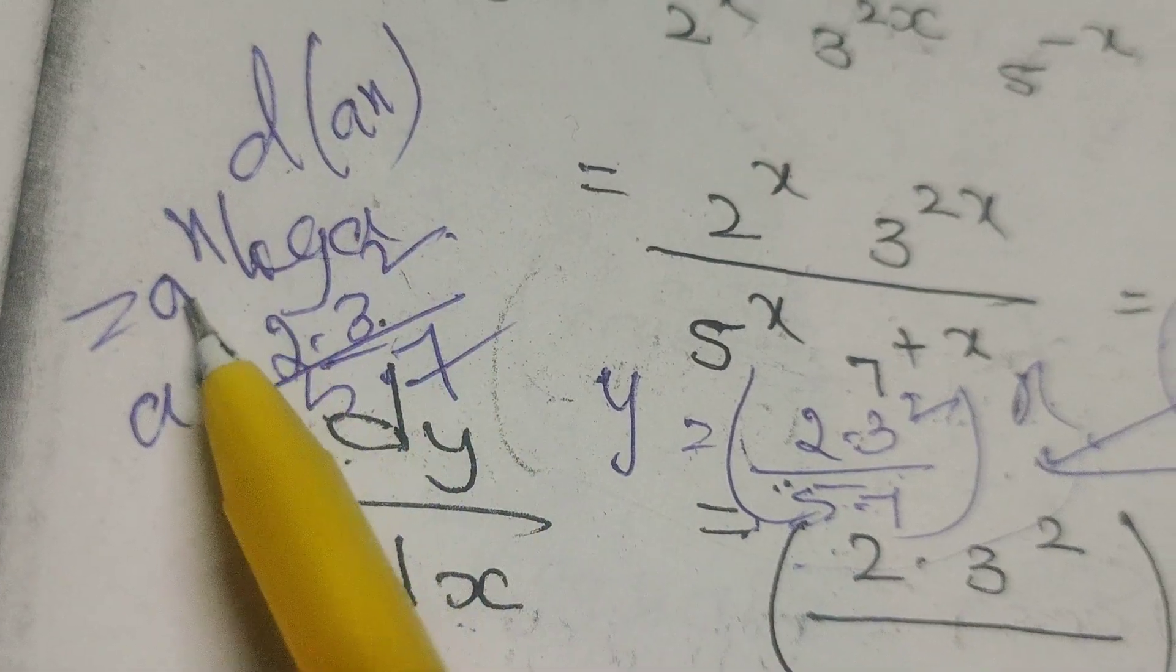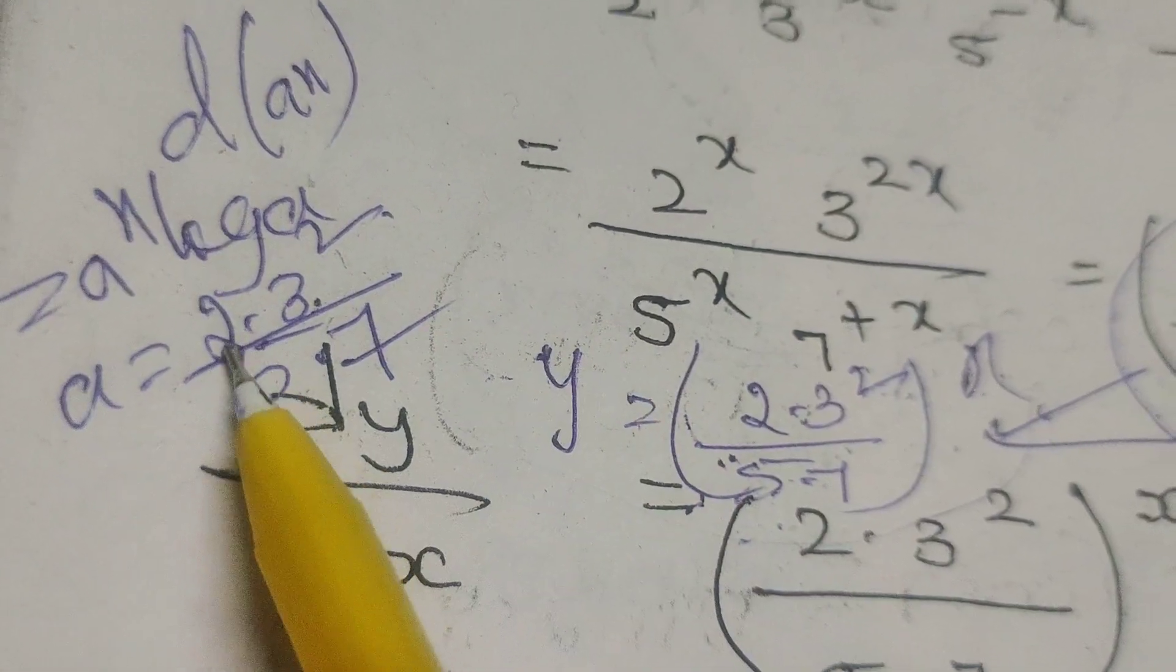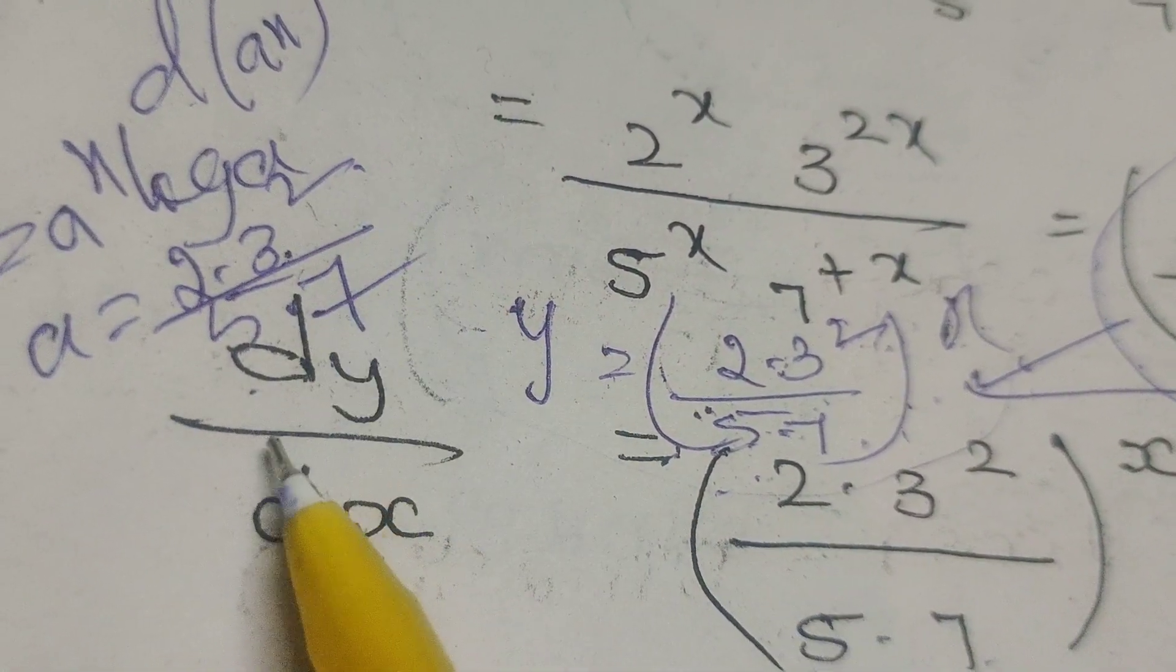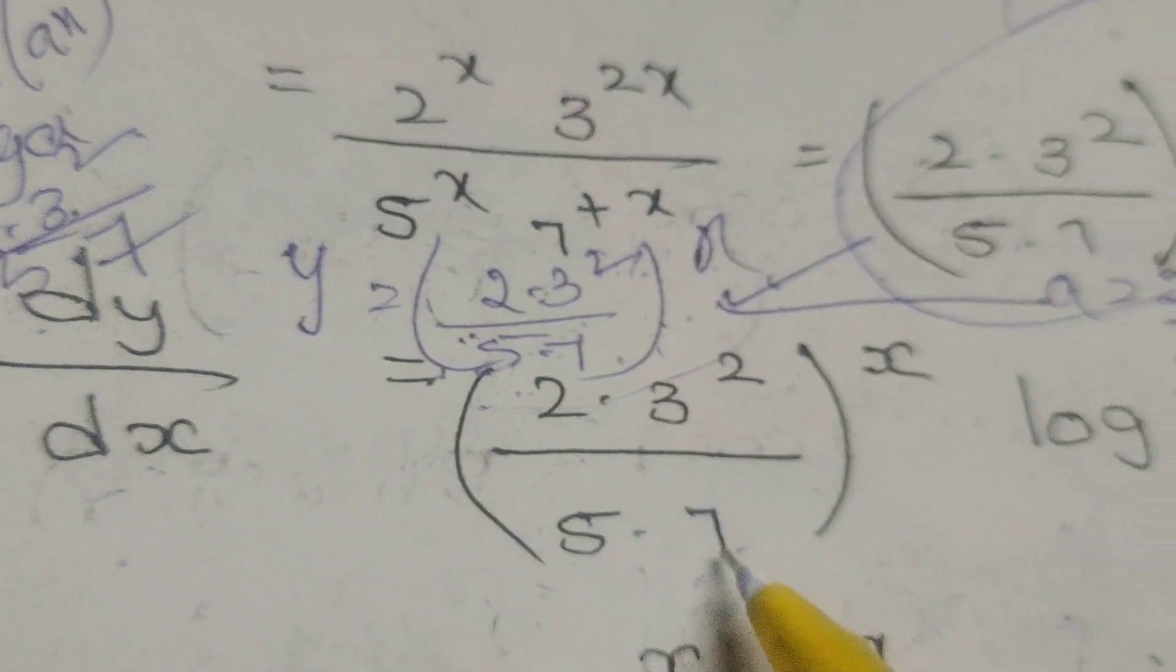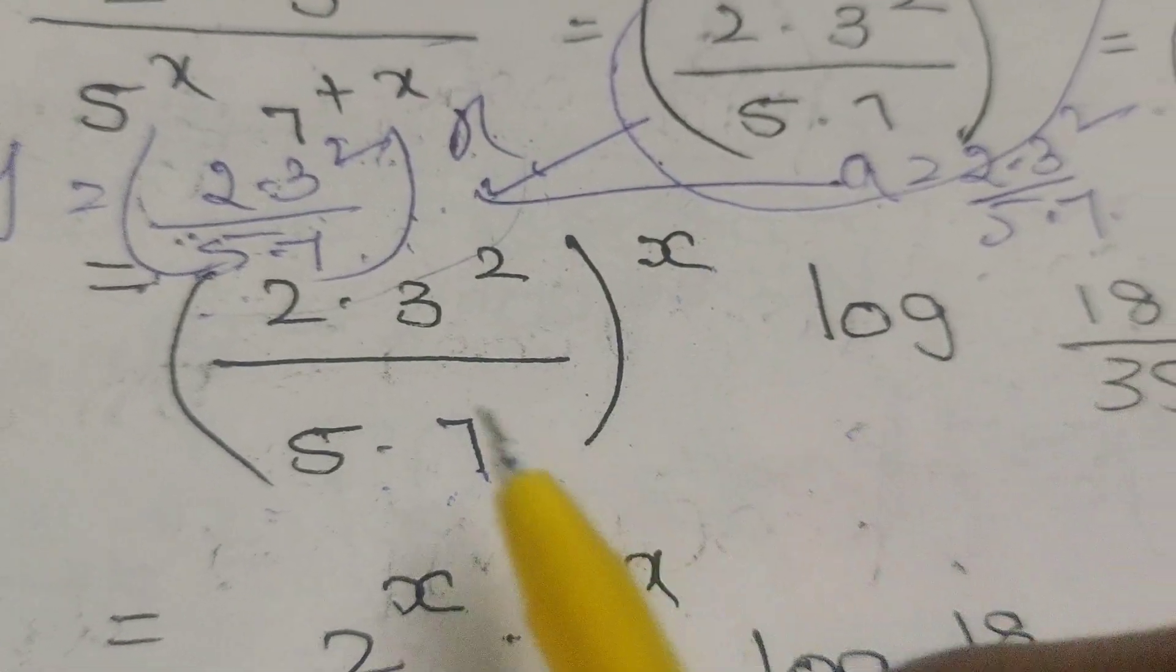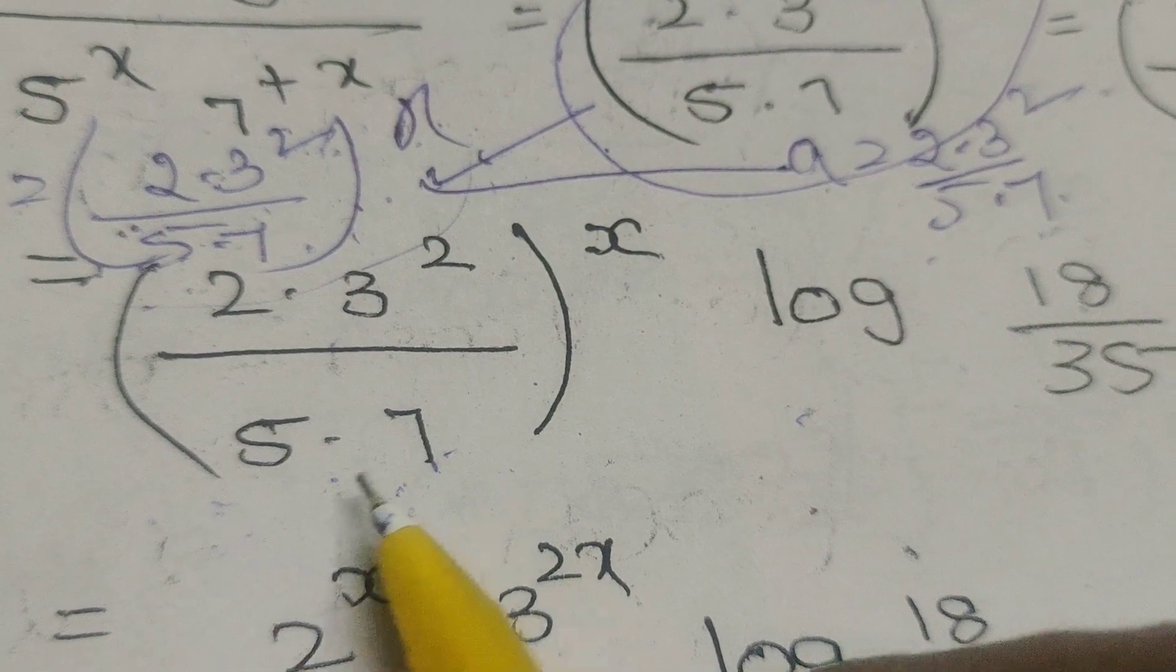Formula means a power x log a. What is a here? According to this problem, 2 into 3 square by 5 into 7 whole power x. Log a means log 2 into 3 square by 5 into 7.